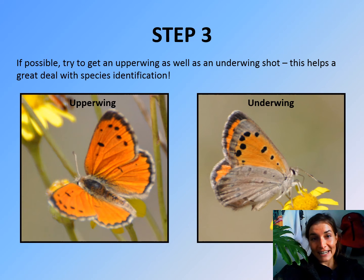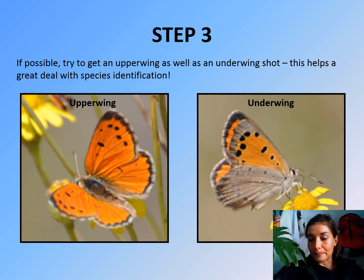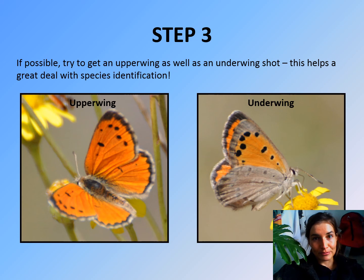Some more tips on photographing your butterflies: this helps especially with identification — try and get a photograph of the upper wing and the under wing, so a photograph from the top and underneath the wings or the bottom. And also try to crop your photo in such a way that the butterfly or moth is in the center of the photo. This helps a lot.